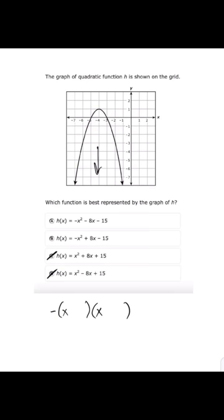When we factor, we're finding the x-intercepts, also known as the zeros. For this graph, the x-intercepts are -5 and -3. When we put that into our factored form, we use the opposite sign.